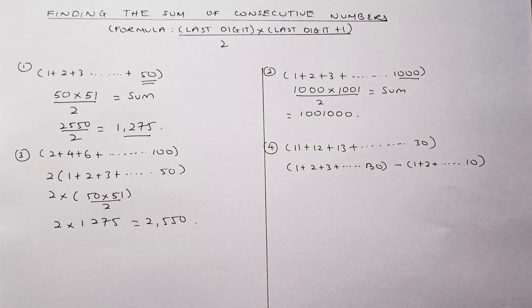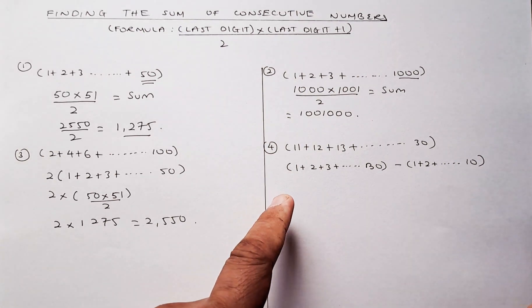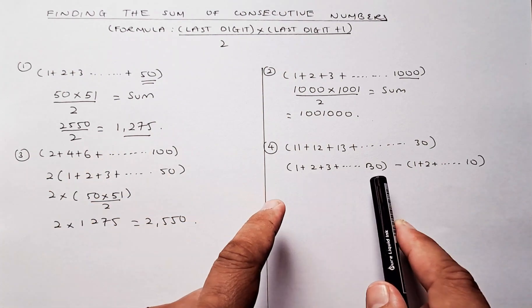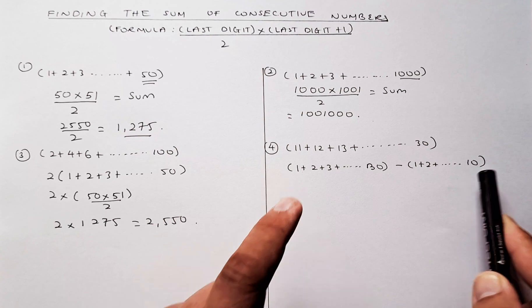So the last question is question 4. What happens if it doesn't start from 1? So it starts from 11, 12, 13. So the trick is that you take from 1 to 30 and you minus the first number. So 1 to 30, you take 1 to 30 minus 1 to 10. Hope you get what I mean.